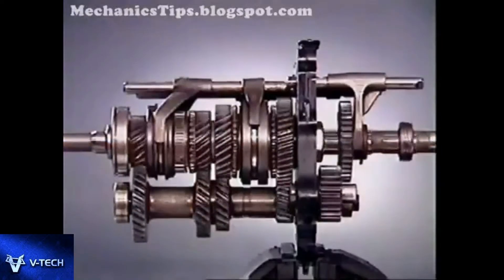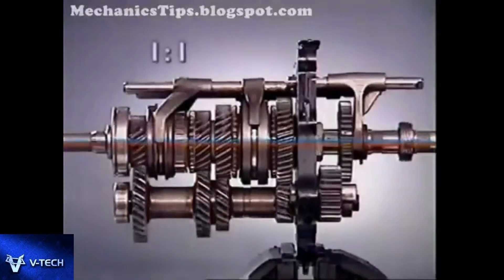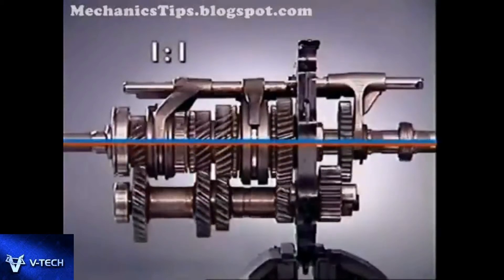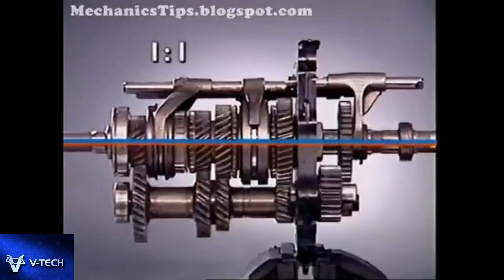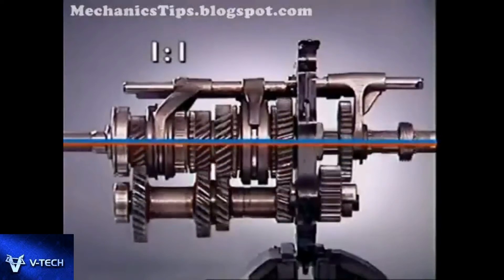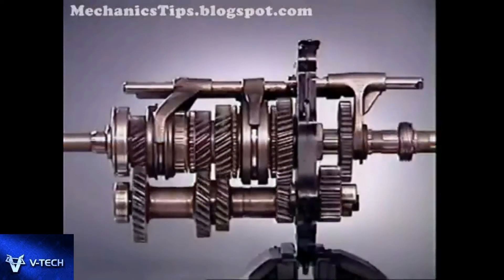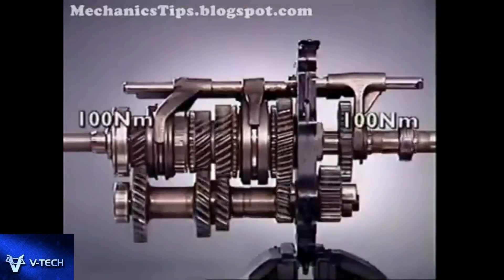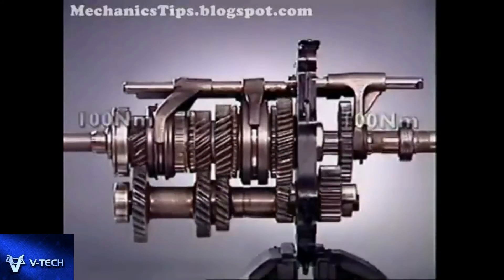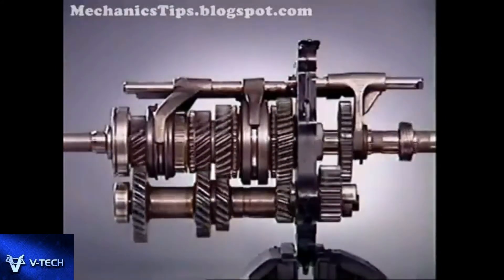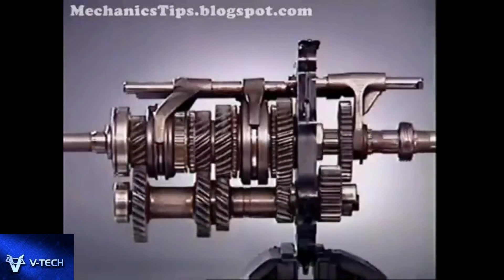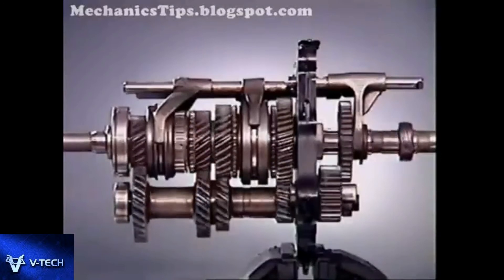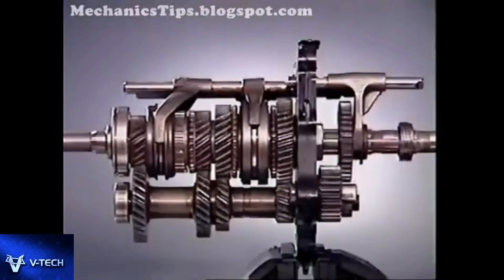In fourth gear, the input and output shafts are locked together, providing a direct drive with a one-to-one ratio. With no reduction through the counter shaft gears, the input and output shafts turn at the same speed and therefore there is no torque multiplication. The counter shaft gears and their corresponding gears on the main shaft continue to rotate, as the counter shaft is constantly in mesh with the input gear, but they do not transmit any drive.